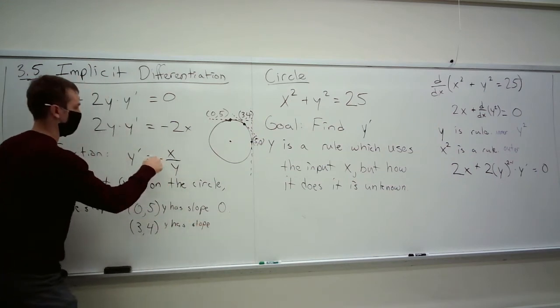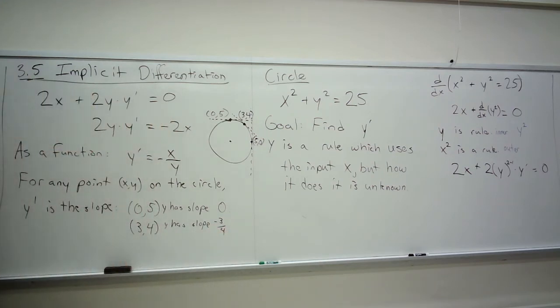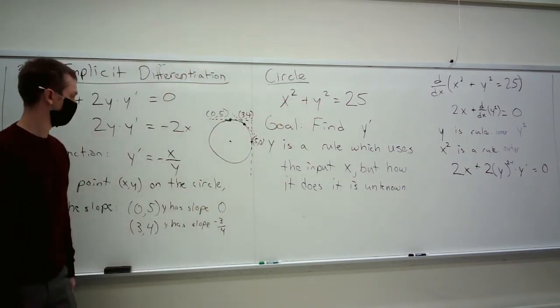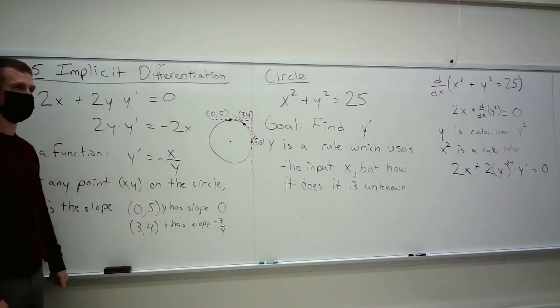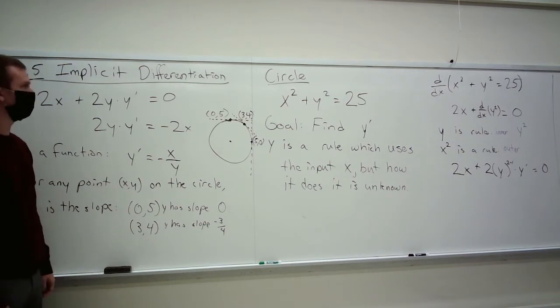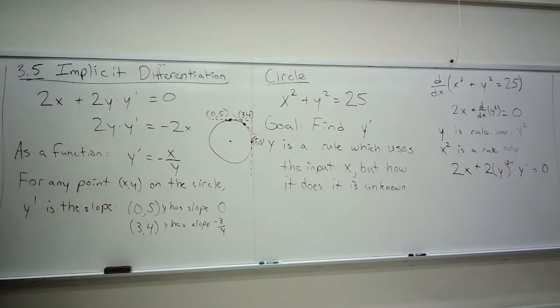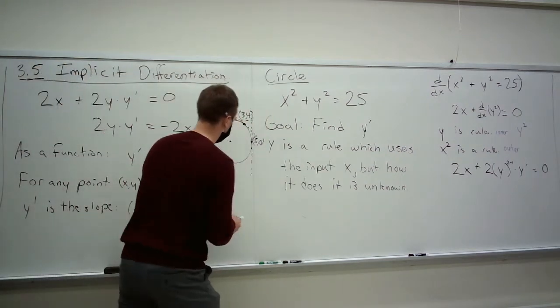We never once solved for the rule for y. Never once. Right? Never once. You don't necessarily need to be able to solve for that. If you have some input x, plug it in. See if you can find that y value. Maybe you're going to find multiple y values. But, slope can just be found through this implicit differentiation process. And this process distinguishes, remember there's two functions, one on bottom and one on top, which, when glued together, gives you the circle, right? These two functions give you the circle.